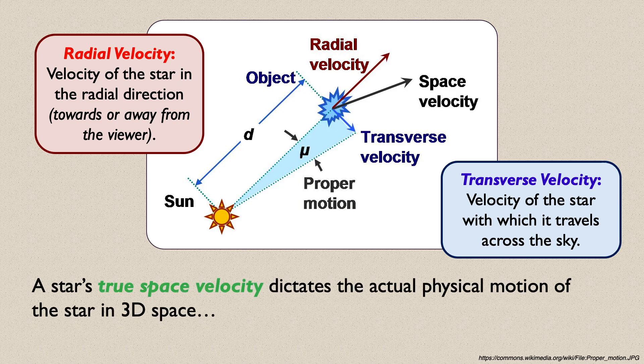Its transverse velocity is the velocity with which the star travels across the sky, either left or right, or up or down, from the viewer's point of view.